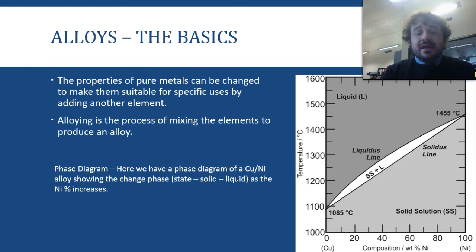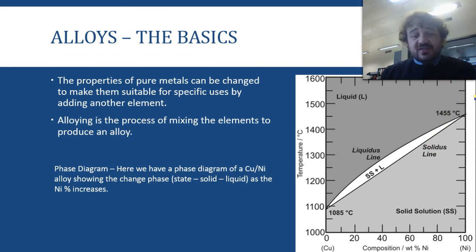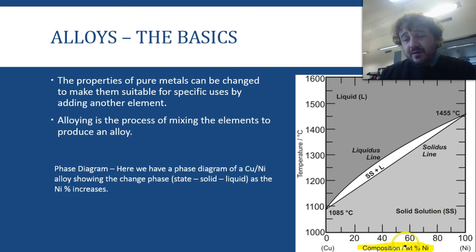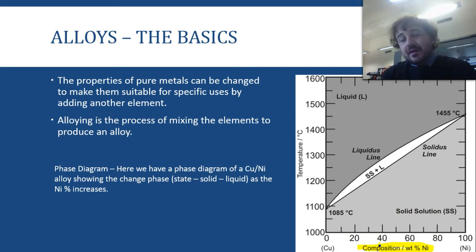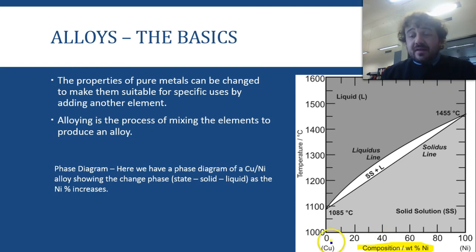Here we have a phase diagram. Phase diagrams are cool. Phase means state — so solid or liquid. Down the bottom we have the percentage; in this case this is Copper and Nickel. So the percentage of Copper and Nickel involved. That goes across from zero Nickel to 100% Nickel, and correspondingly from 100% Copper to zero Copper — so those invert.